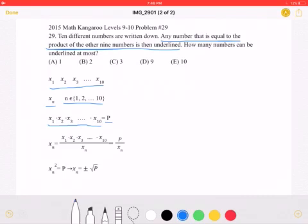So, now let's go back to our number, x_n. Again, x_n is a number that is going to be underlined. And, again, as it says in the problem, the number that is underlined is equal to the product of the other nine numbers.